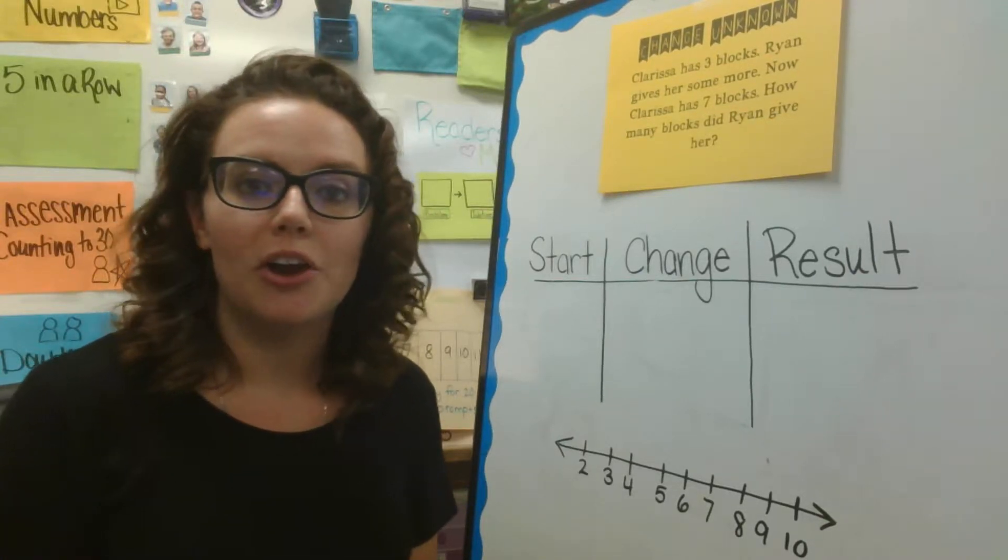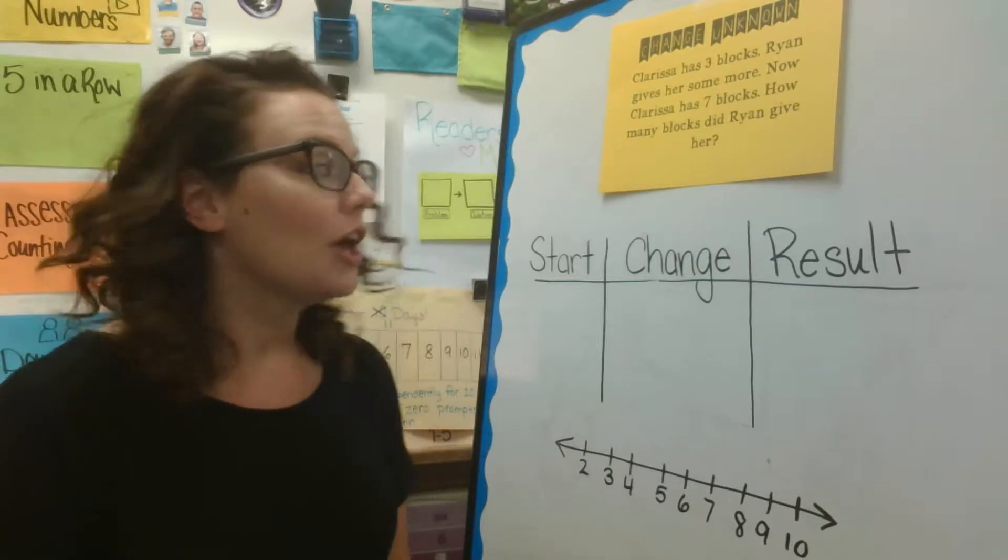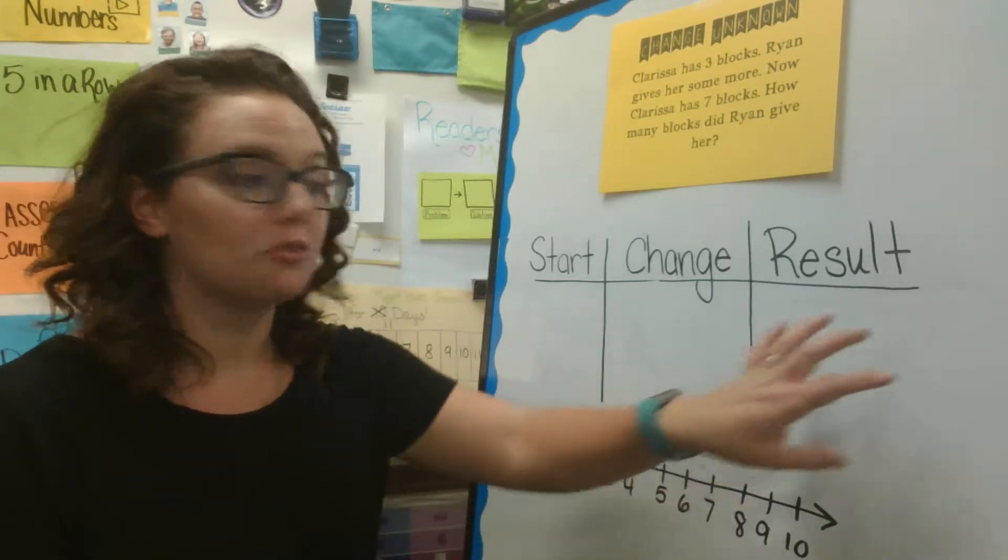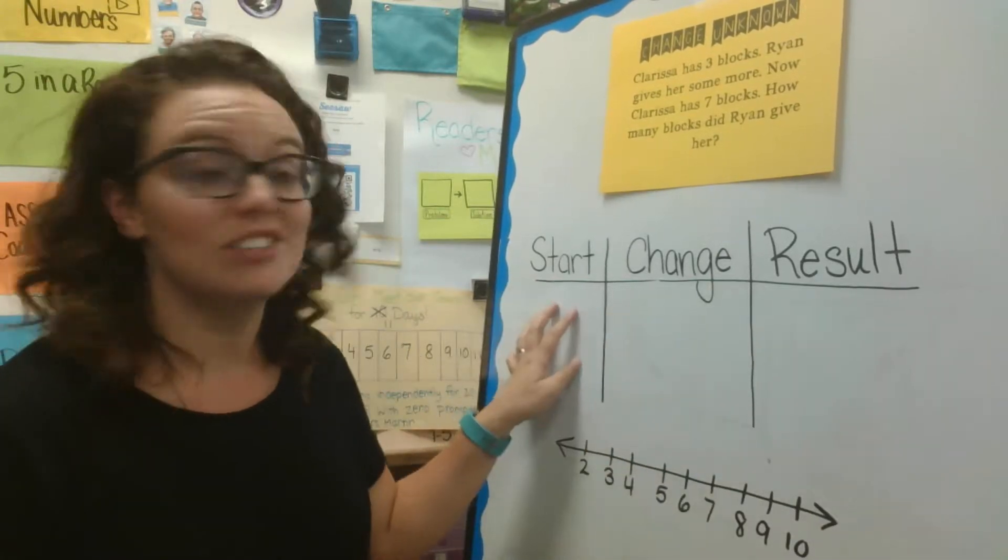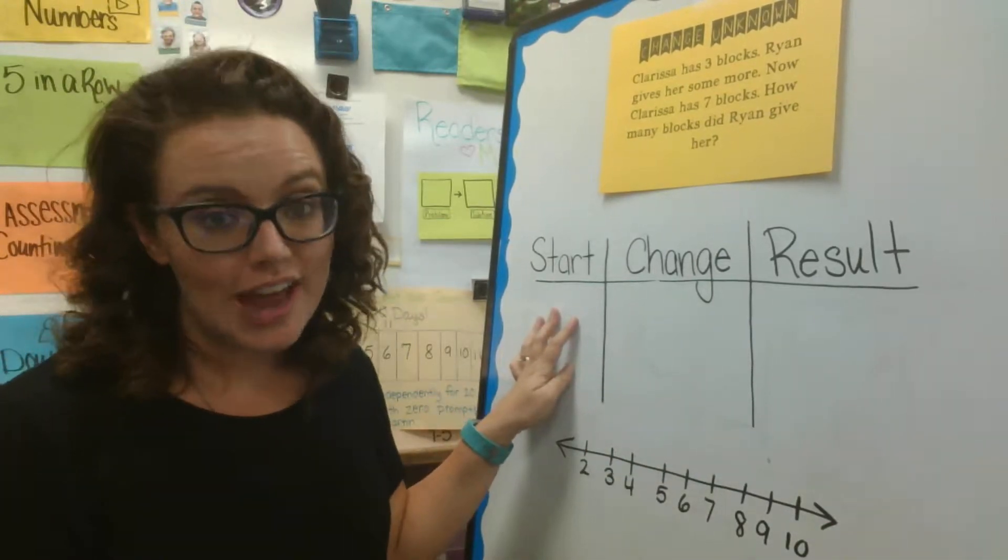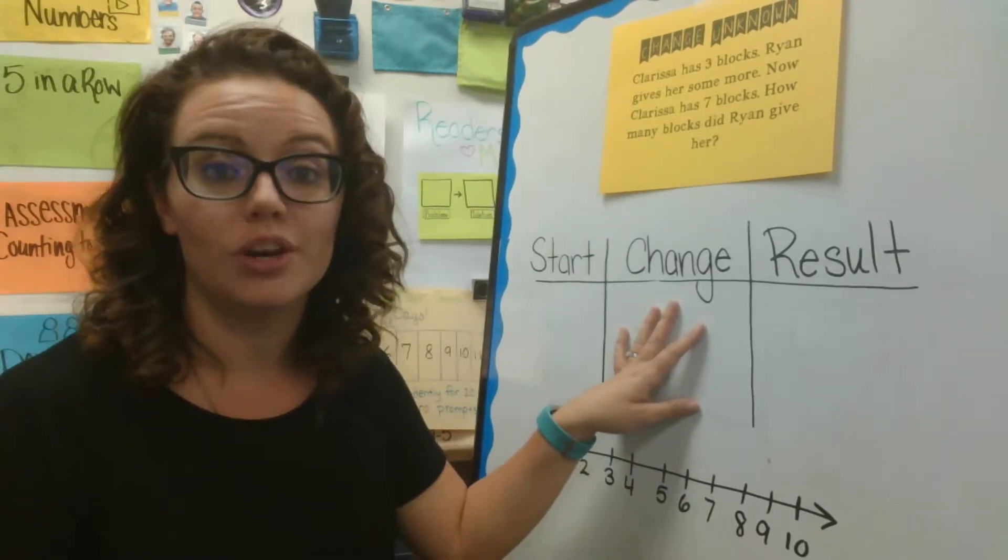Okay, let's talk about our last basic type in addition story problem. We have talked about when the result is unknown and how to solve problems when the start is unknown. Now let's talk about what to do when the change is unknown in the story.